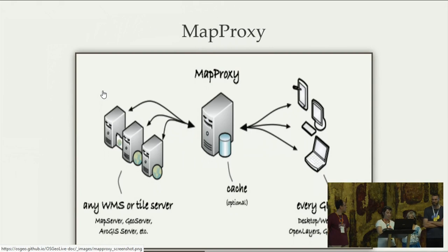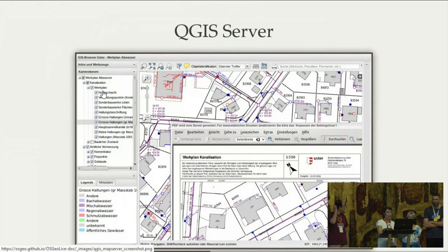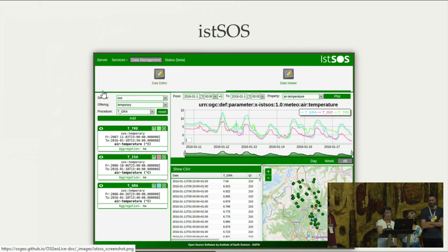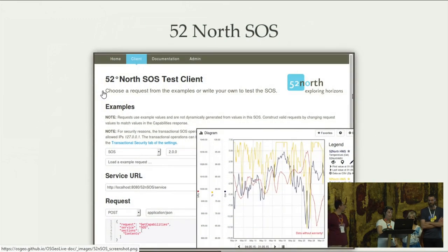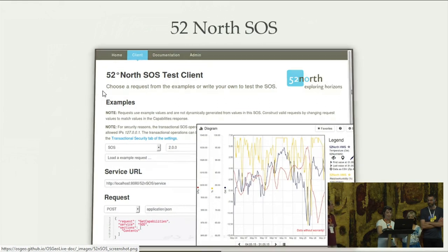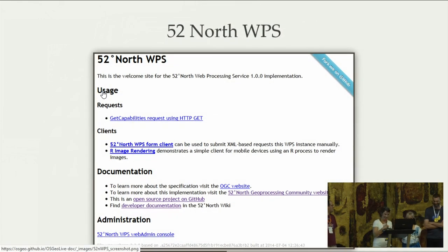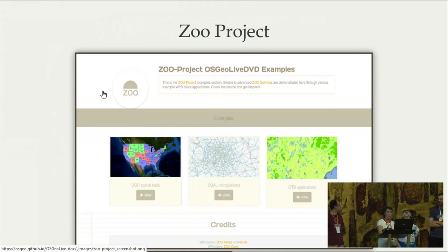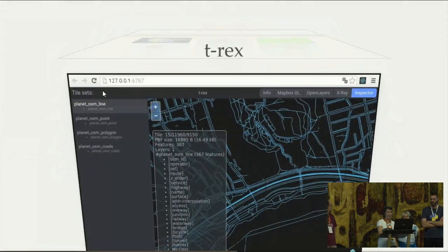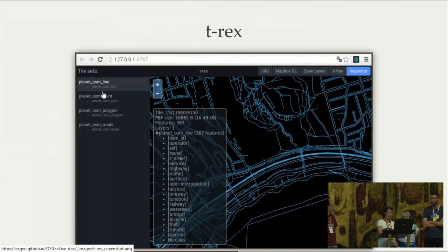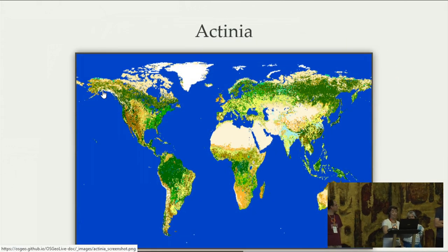MapProxy is available if you want to proxy your services. QGIS Server offers a production line from QGIS Desktop to QGIS Server, which may be very helpful for desktop users. We also have 52 North WPS and the ZOO project, which is in incubation and offers a lot of functionality. T-Rex is new and provides tile serving. Actinia is new as well and offers raster data processing in the cloud.